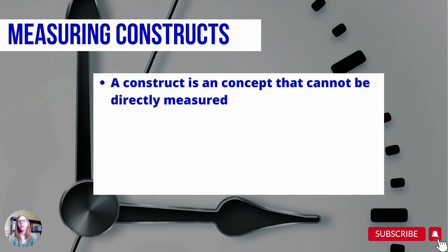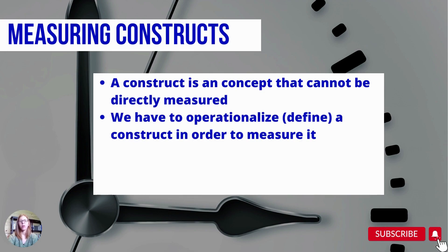A construct is a concept that cannot be directly measured. In the social sciences, that might be something like depression, or it might be something like hopelessness, where we have to define what we're actually talking about in order to measure it. That's called operationalizing — we have to operationalize or define our construct so that we can have some kind of measurement.